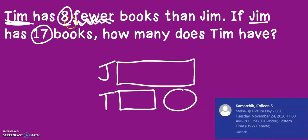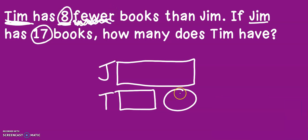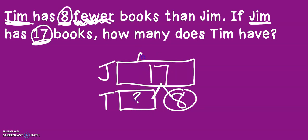Now we can plug in our numbers. We have eight fewer — and remember, 'fewer' goes in the circle. We know that Jim has 17 books, so let's put 17 for Jim. We are missing the bottom square for Tim. Using the math mountain, I already have my total and I need to find my missing number. I'll use touch points and count down from 17: 16, 15, 14, 13, 12, 11, 10, 9. That means Tim has nine books.